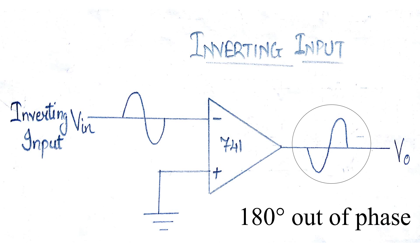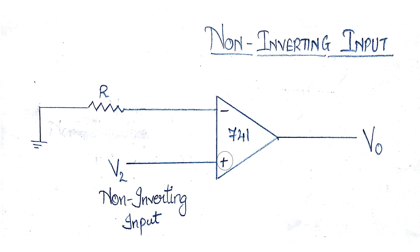Non-inverting input: In this configuration, the input voltage is applied directly to the non-inverting input terminal, which means the output gain of the amplifier becomes positive in value. A signal applied at the non-inverting input terminal is amplified, and the output signal is in phase with the input signal.